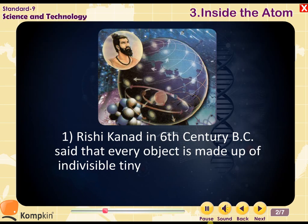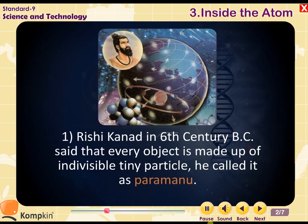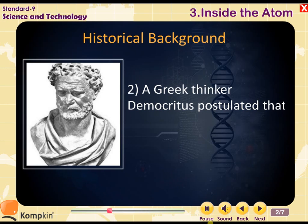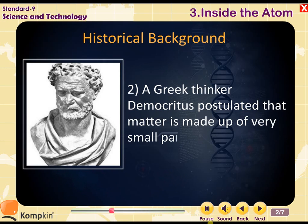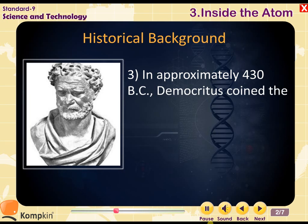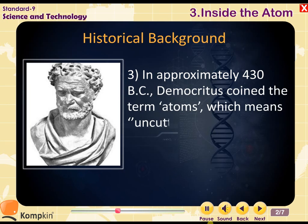Rishi Kanad called it 'Parmanu.' A Greek thinker, Democritus, postulated that matter is made up of very small particles, that is, atoms. In approximately 430 BC, Democritus coined the term 'atoms.'